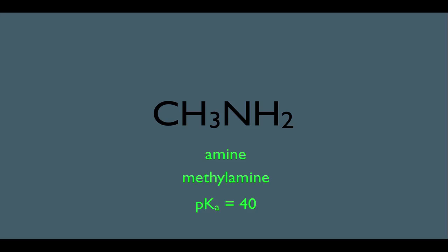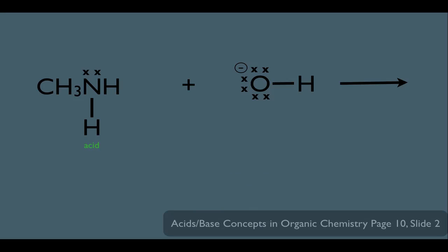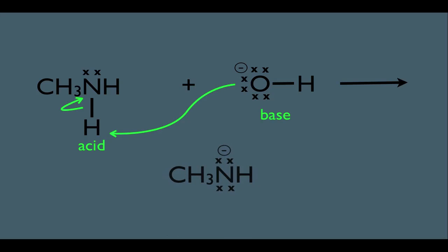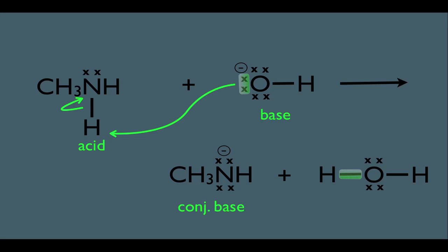Here's the amine acting as an acid with a particular base. The amine turns into its conjugate base — simply one of its hydrogens has been removed — and as a side product we get H₂O. In the accounting: these two electrons became this bond, so this hydrogen of the amine is now on the water, and the electrons between N and H jumped up onto the nitrogen, now existing as a lone pair.